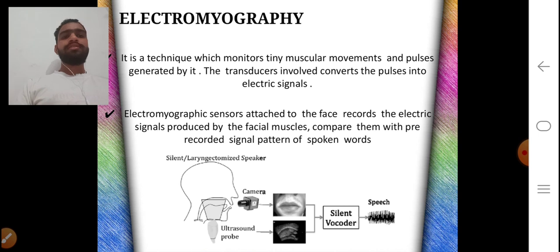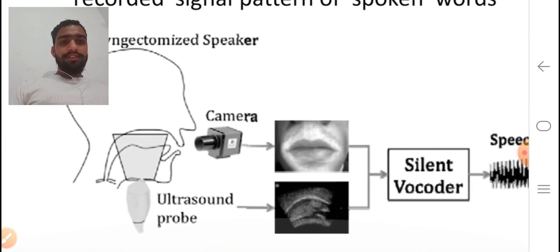Now we discuss Electromyography. It is a technique which monitors tiny muscular movements and pulses generated by it. The transducer involves converting the pulses into electrical signals. As we see in this diagram.